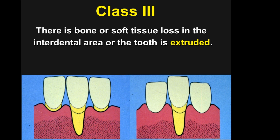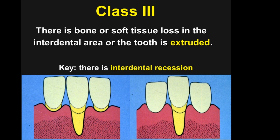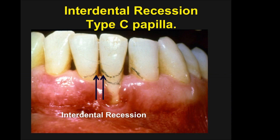Class III: there has been a change here. There is bone or soft tissue loss in the interdental area, or the tooth is extruded. When the tooth extrudes it takes the cemento-enamel junction, and there is no way to get complete root coverage because we can only get root coverage to the height of the gingiva on the facial of the adjacent teeth. The key thing to understand is there is interdental recession.